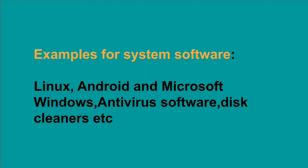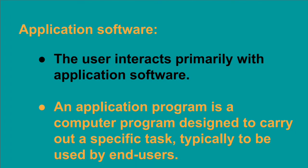Next is application software. The user interacts primarily with application software. If we want to draw a picture, we open paint software. If we want to edit a photo or video, we use an editor software. If we want to play music, we open a media player. For each task we depend on a specific application program.